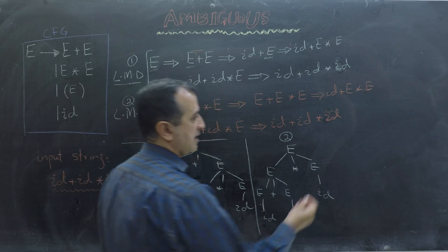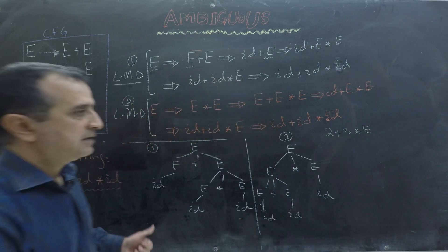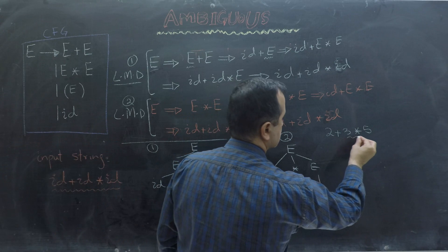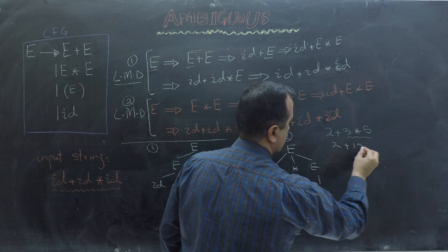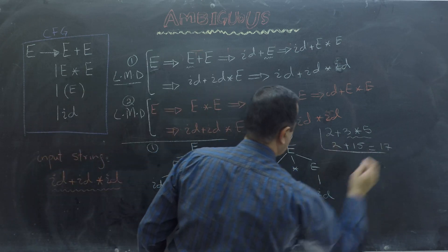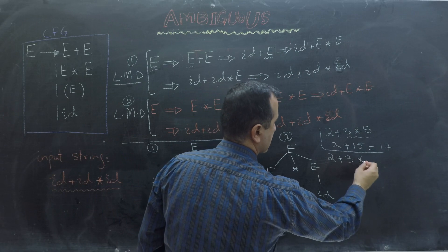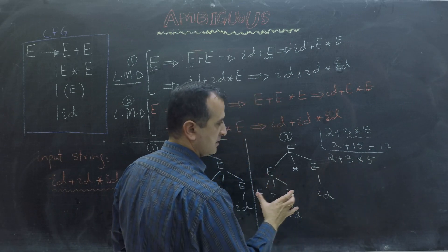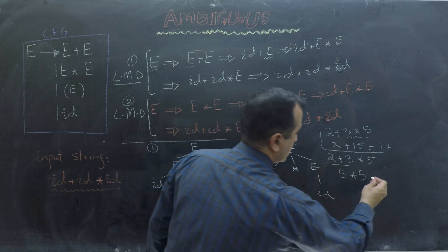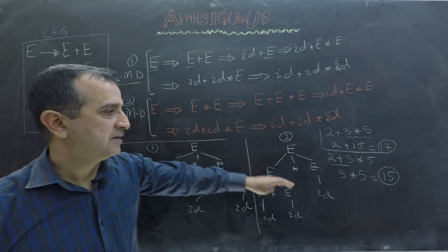If I have the input 2 plus 3 times 5, the first parse tree will first do the multiplication, creating 2 plus 15, then do the addition, giving a final result of 17. With the second parse tree I first do the addition, so it becomes 5 times 5, then I do the multiplication and my result is 25. Obviously both cannot be correct, so this is a problem.